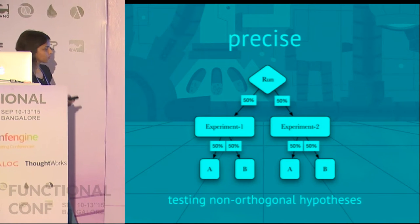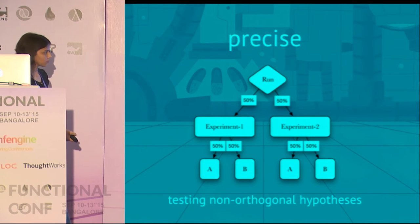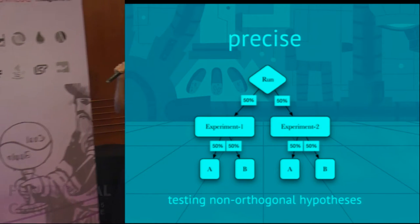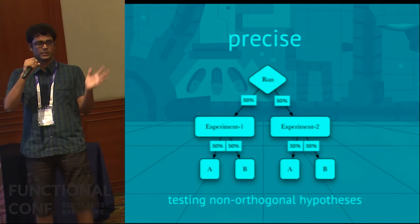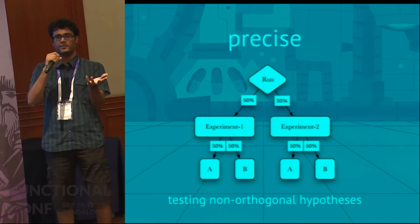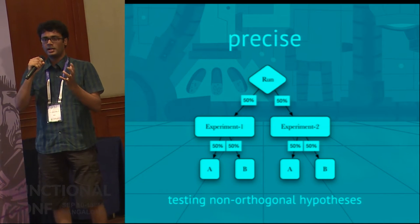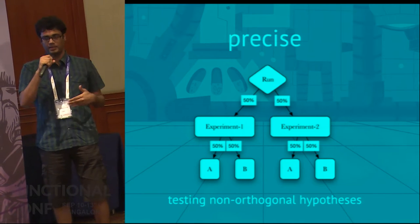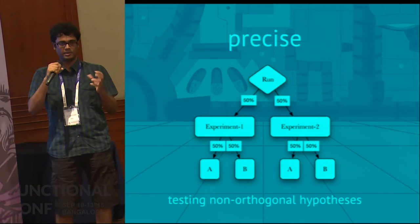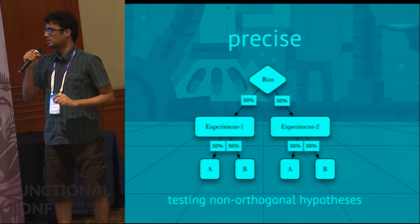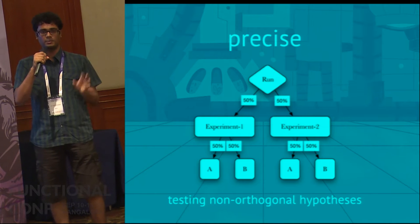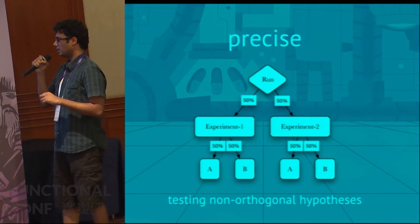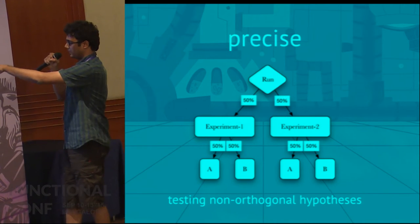Another way you can run experiments at the same time is by splitting the traffic between them. You do this normally when you want precise measurements in each experiment. For example, if you're doing experiments on your checkout page and you've changed both the typeface and the button color, you're not sure which is more compelling. To make well-informed precise decisions, you run them with split traffic, so a person who sees the typeface change will never see the button change and vice versa. You can see that the traffic is split at all places — so this is quite expensive.